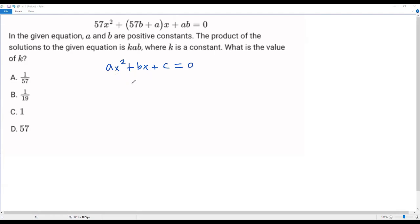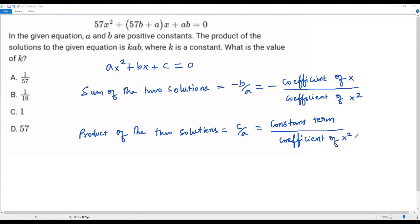Let me write the formula for sum of the two solutions and product of the two solutions. I have written formulas for sum of the two solutions: negative b over a. The negative sign comes in the formula itself, and b refers to the coefficient of x divided by a, which refers to coefficient of x squared.